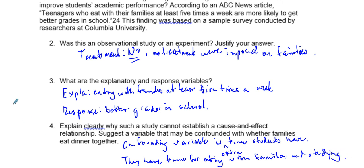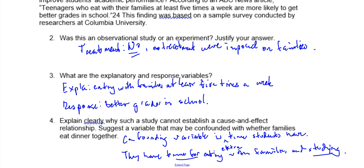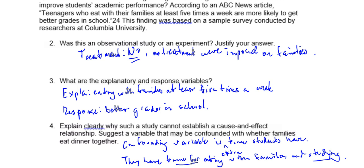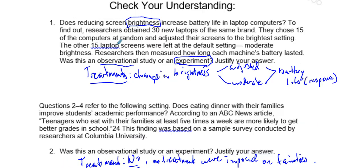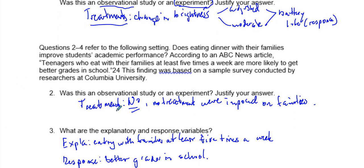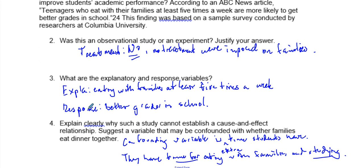That's just one confounding variable, but there could be others. The confounding variable of extra time affects both the explanatory variable — eating with their families — and the response variable — better grades — since having more time also means more time for studying. That's one of the confounding variables in this particular observational study. This shows the difference between an observational study and an experiment, and how to identify treatments, explanatory and response variables, and confounding variables.